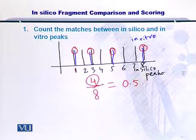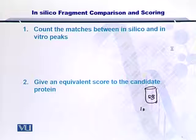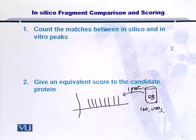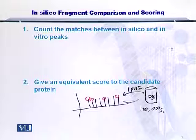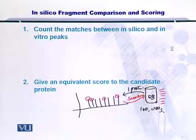Let's move next. For each protein in the protein database — here is your protein database, of course it contains thousands or hundreds of thousands of proteins — at a time you take one protein, you generate its in silico spectrum, you compare how many experimental peaks matched, and you return the score for this protein. In this way, you will return a score for all the proteins in the protein database, so each candidate protein will have a score for itself.